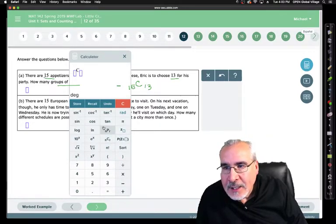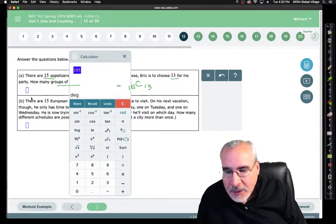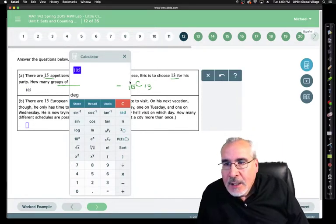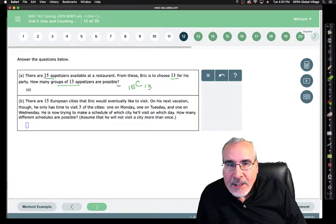There's our little chooser guy, so we just click on it. And 15 choose 13, it's 105. So we'll go ahead and put that in as our answer, close this down, and then let's go to the next question.